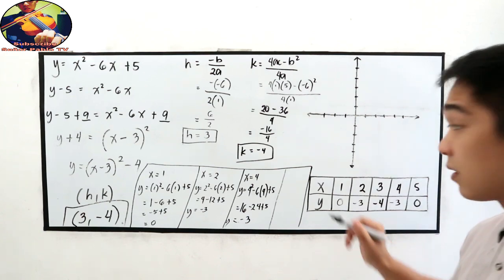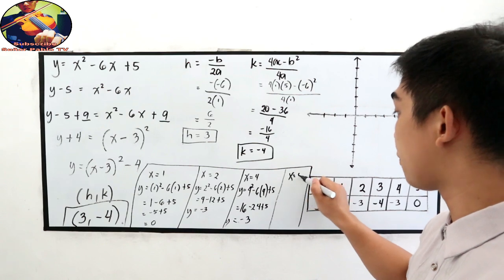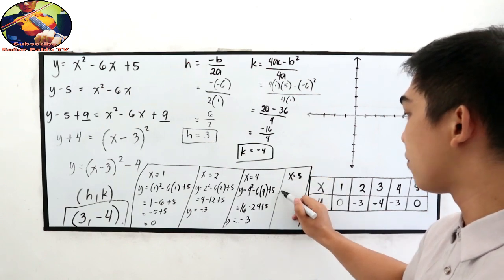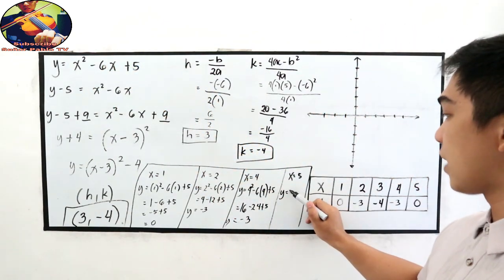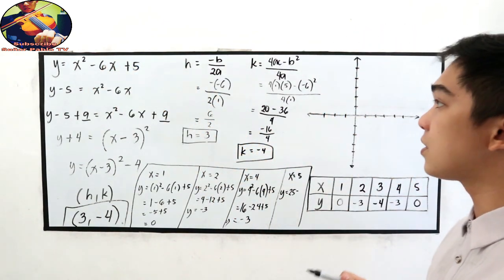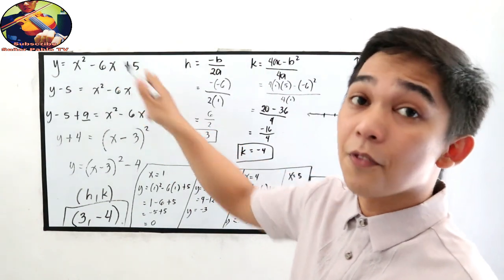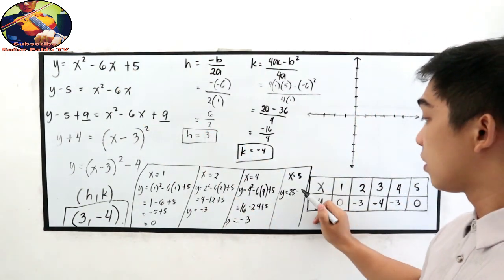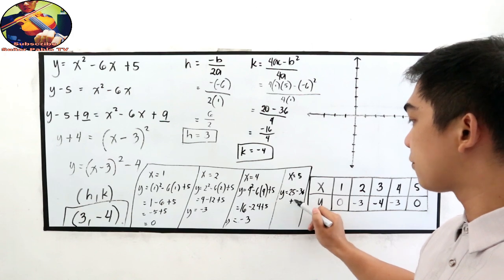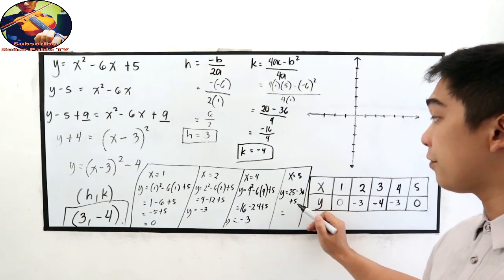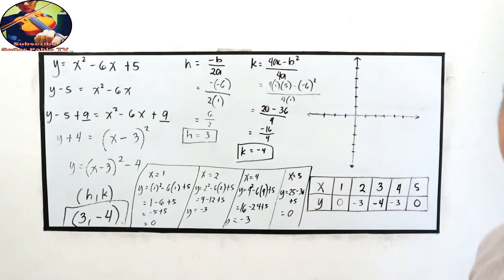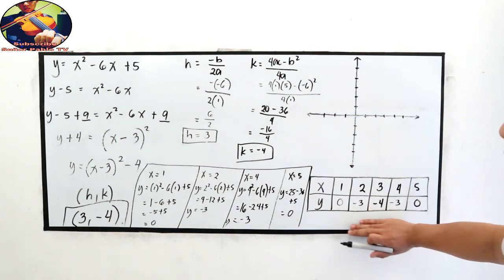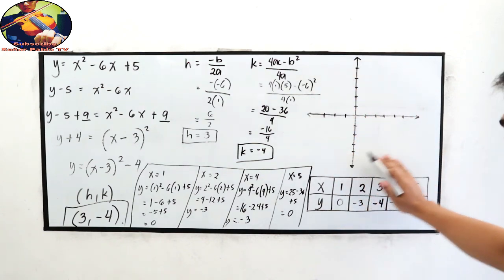Let's check: if x equals 5, then y equals 5 squared minus 6 times 5 plus 5, which is 25 minus 30 plus 5, giving 30 minus 30 equal to 0. Confirmed. This is our completed table of values. Now let's graph using our coordinate plane.